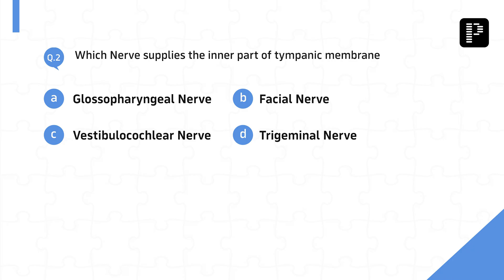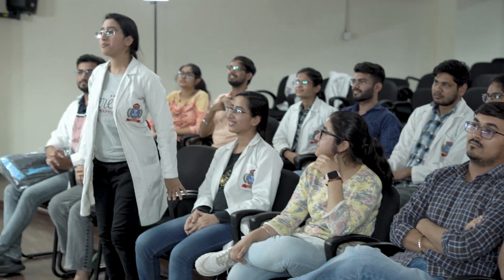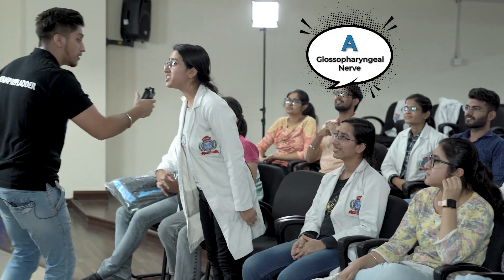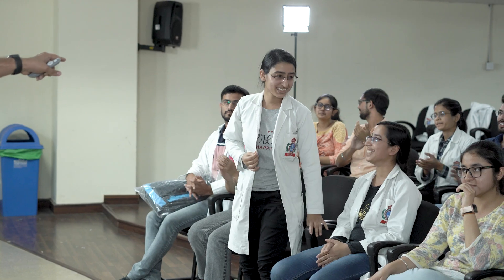Next question in ENT: which nerve supplies the inner part of the tympanic membrane? One, two, three. The twins — Glossopharyngeal nerve. Glossopharyngeal nerve. Congratulations everyone, please clap. You are selected!